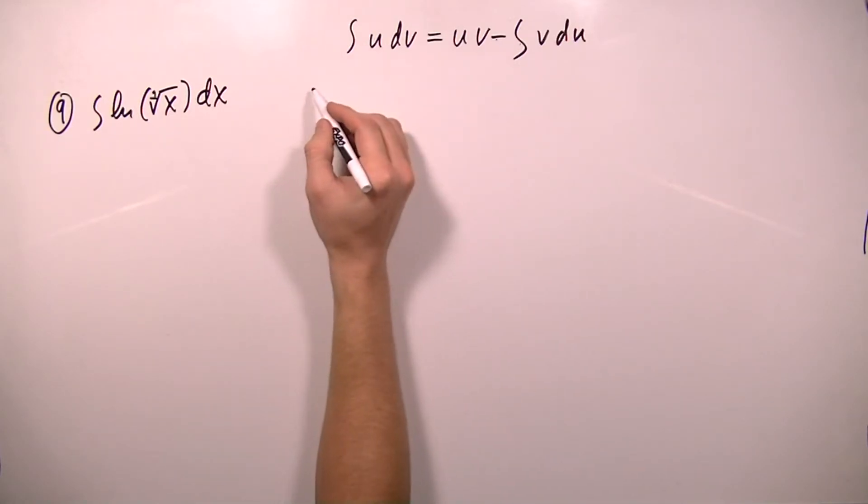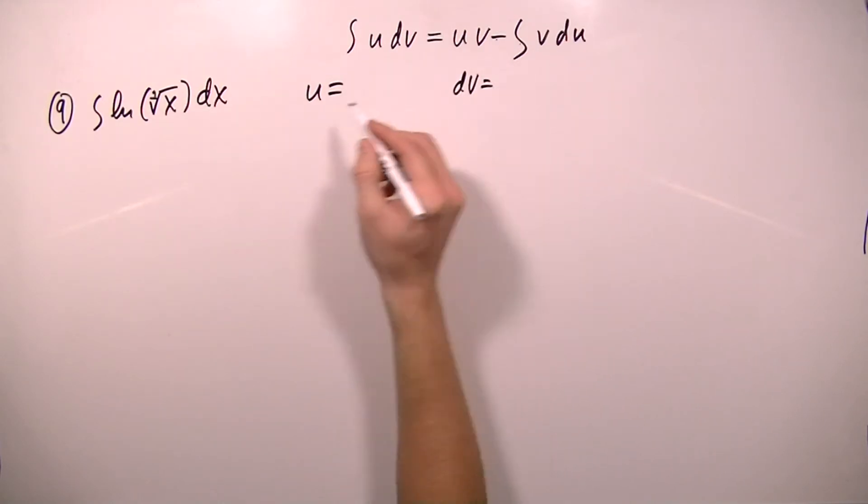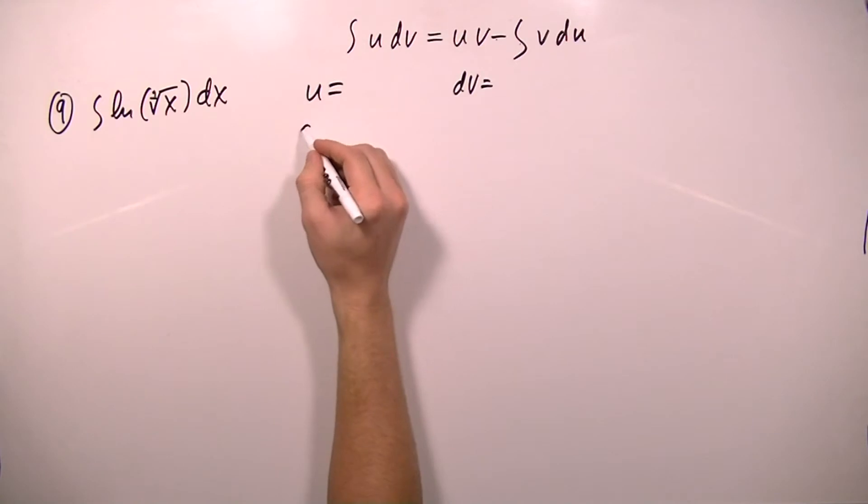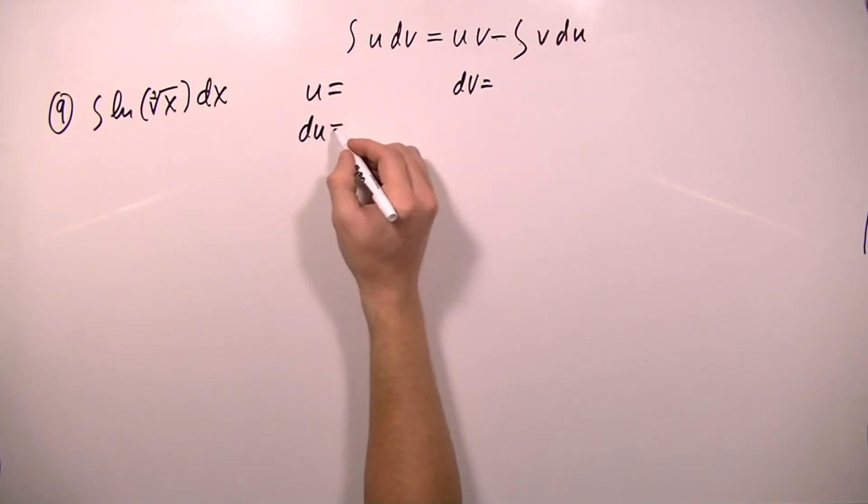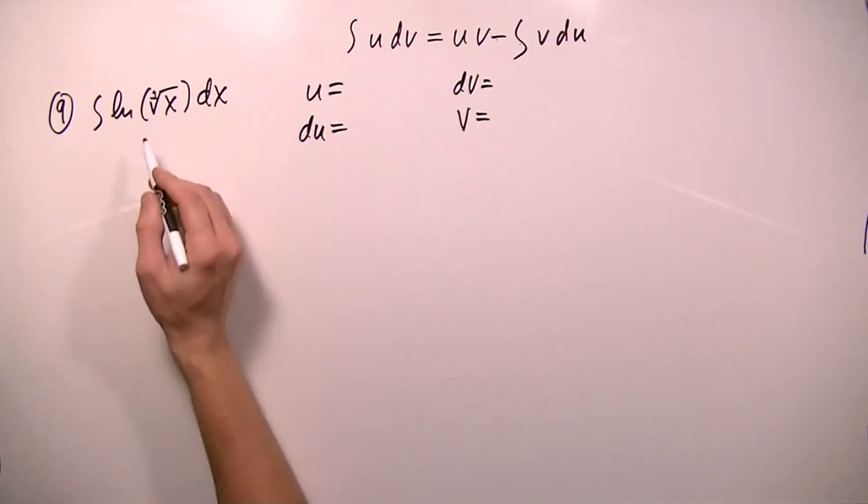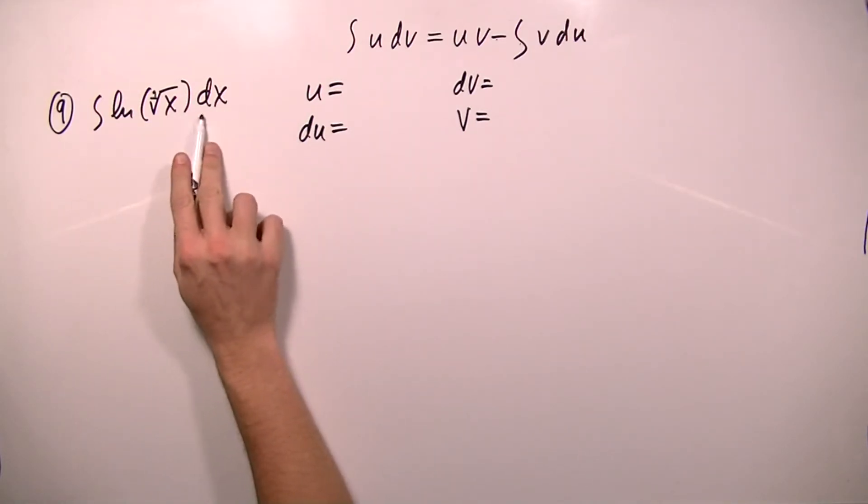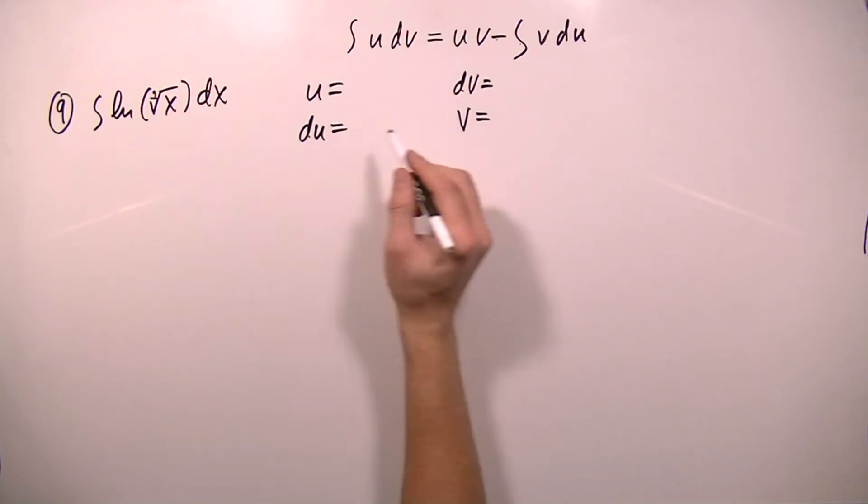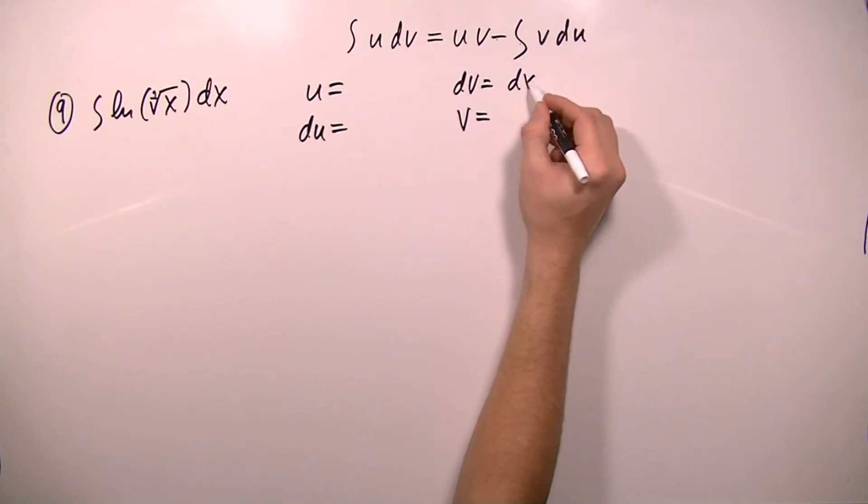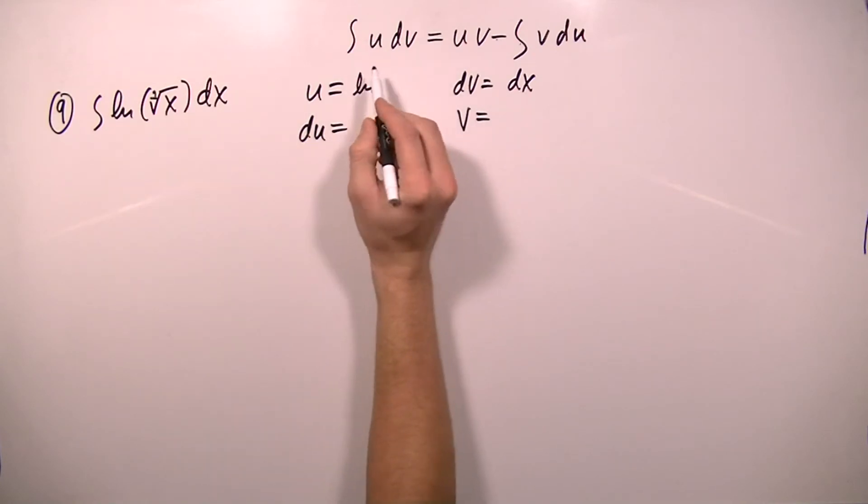So we need to start out by deciding which factor we're going to set equal to u and which factor we're going to set equal to dv. And then we will find du and we will find the integral of dv. Now this is an interesting problem because it looks like there's only one factor here, but dx is actually a factor of its own. So dv is going to be just dx, and u will be the natural logarithm of x to the 1 third power.